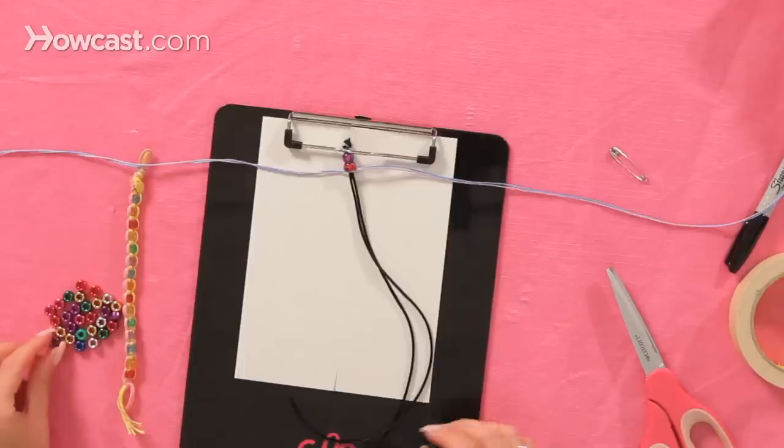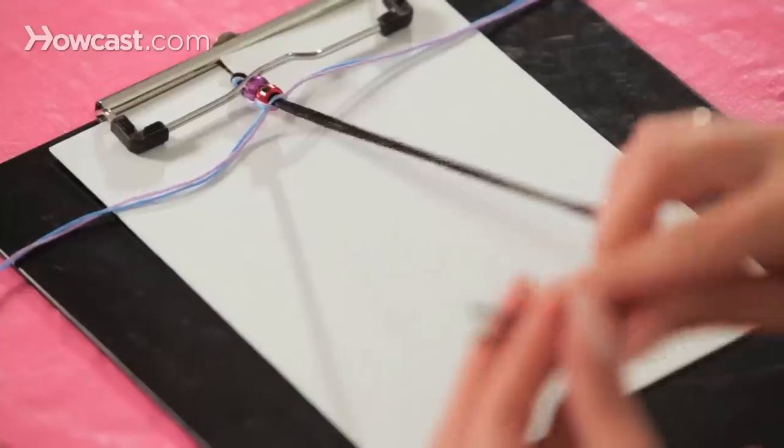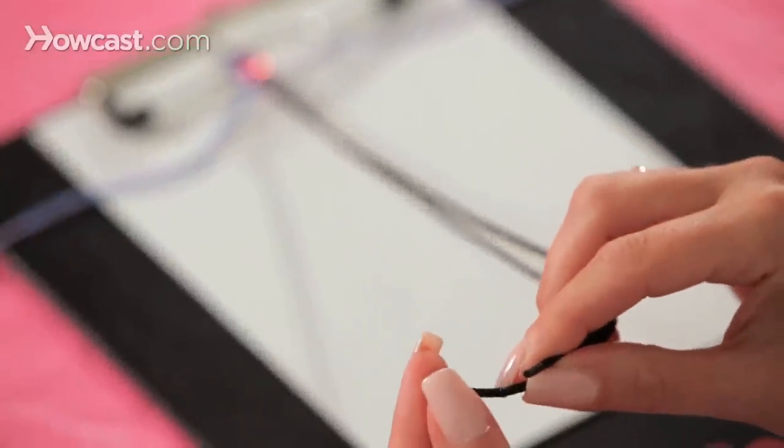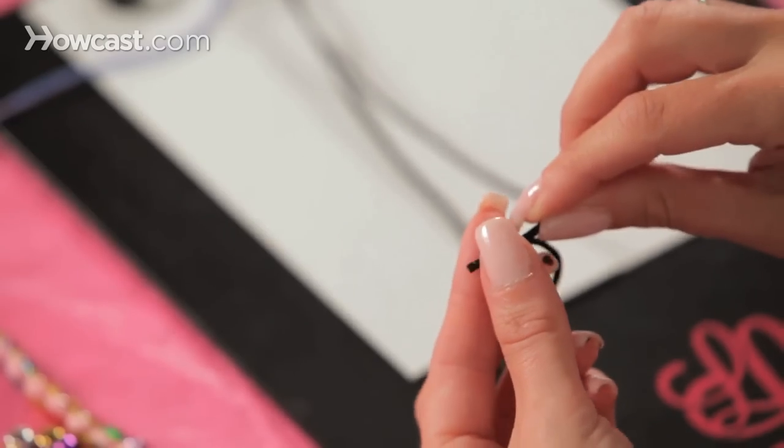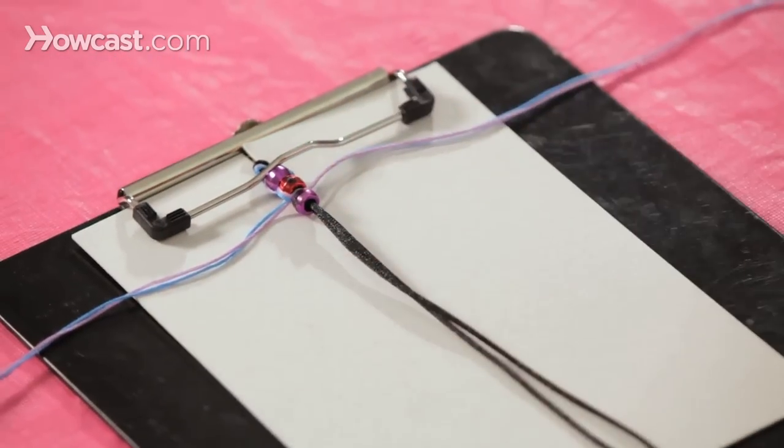And you're going to pull both tightly together. Now you secured your second bead. Take a third bead, put both cords through, pull to the top.